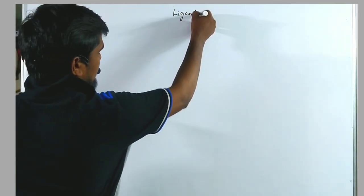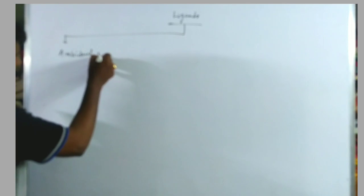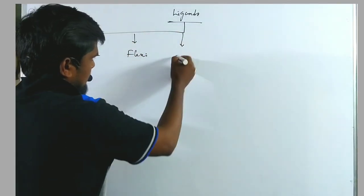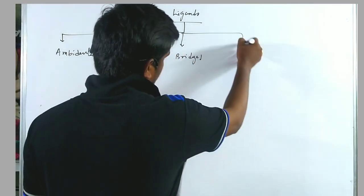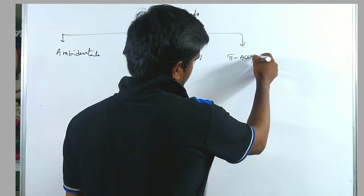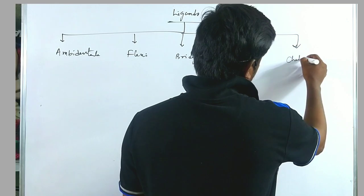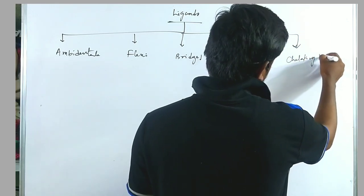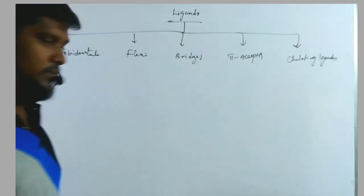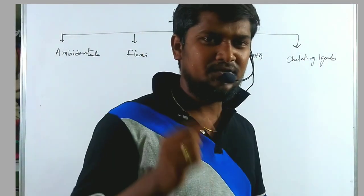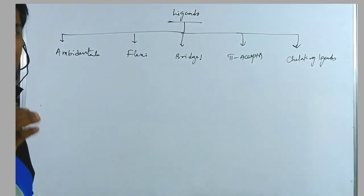Ligand parameter classification includes: ambidentate ligands, flexidentate ligands, bridging ligands, pi-type ligands, tetra-ligands, and the final one is chelating ligands. Based on these classifications, we will discuss each and every classified ligand in detail.